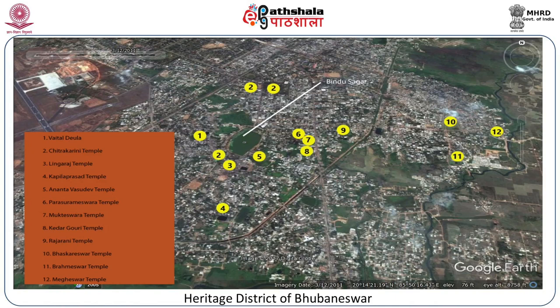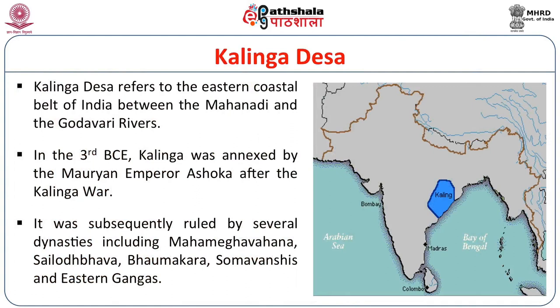This is how Kalinga Desa looked. Today it is the district of Bhuvaneshwar. Kalinga Desa was the belt between the two rivers, Mahanadi and Godavari, as you can see on the map. In the 3rd century BCE, Kalinga was annexed by Emperor Ashoka after the Kalinga War, and that is how the name came.